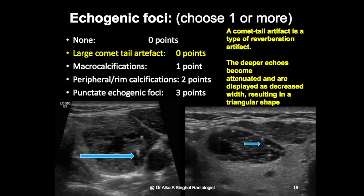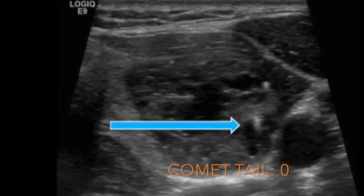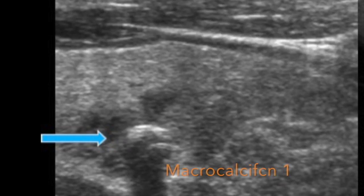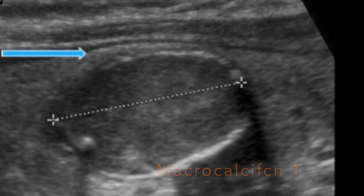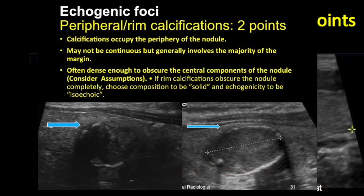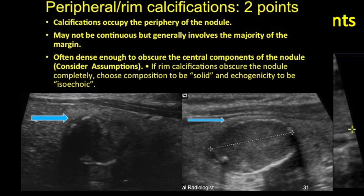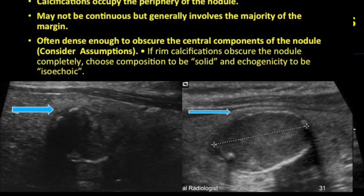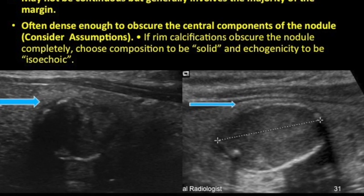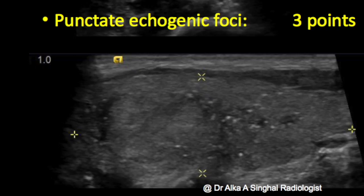For echogenic foci, it is very important to differentiate between the comet-tail artifact and punctate echogenic foci. A large comet-tail artifact is suggestive of colloid etiology and gets a score of zero. Macrocalcifications larger than two to three millimeters get a score of one. Peripheral or rim calcifications get two points — broken rim calcifications are particularly worrisome. Punctate echogenic foci without a comet-tail artifact, suggestive of suspicious etiology such as PTC or medullary carcinoma, get a score of three.